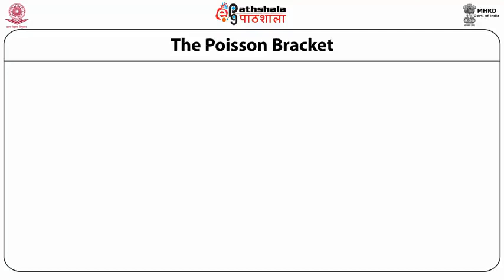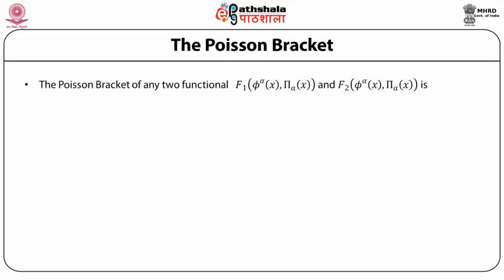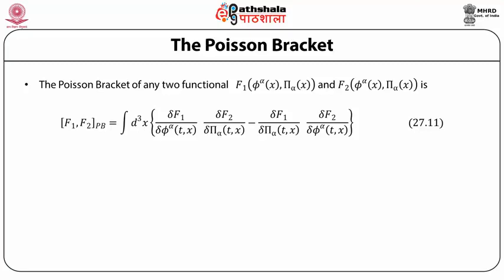We next check on the Poisson bracket. The Poisson bracket of any two functionals F₁(φ_α(x), π_α(x)) and F₂(φ_α(x), π_α(x)) is given by {F₁, F₂} = ∫d³x [δF₁/δφ_α(t,x) × δF₂/δπ_α(t,x) − δF₂/δφ_α(t,x) × δF₁/δπ_α(t,x)].